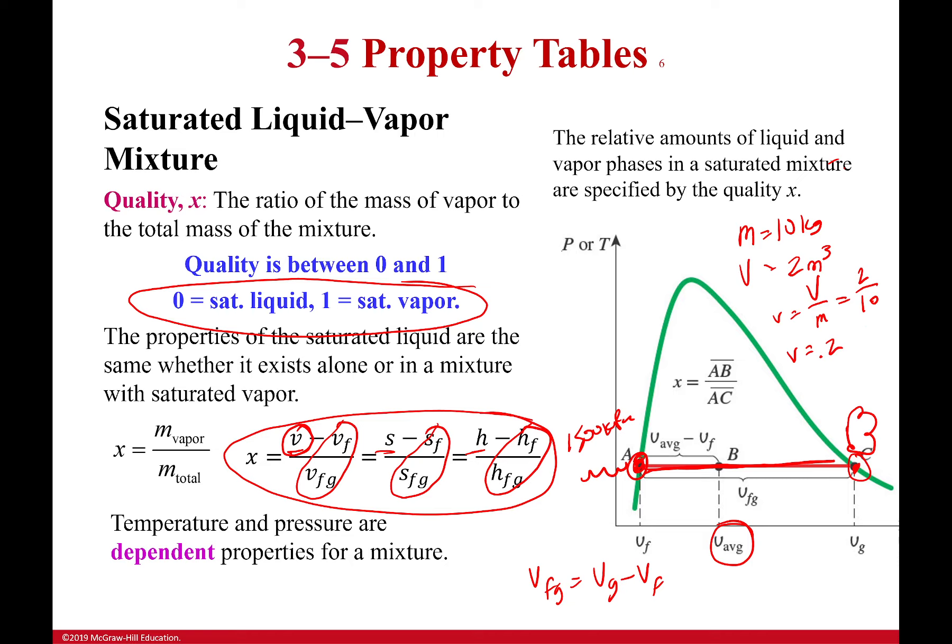Now I would look at my properties. I would find VF and maybe it says that VF is 0.1 and VG is 1. I'm making it easy for myself. Okay, I can then figure out what my quality is. So my quality in that case would be X is equal to what I calculated, 0.2, minus what I looked up, 0.1, all over another thing I looked up, 1. And so in this case, my quality would be 0.1. Pretty simple, not terrible. So it means it's 10% vapor and the rest is a saturated liquid. 10% vapor and the rest is a saturated liquid. So it's mostly liquid in that case.